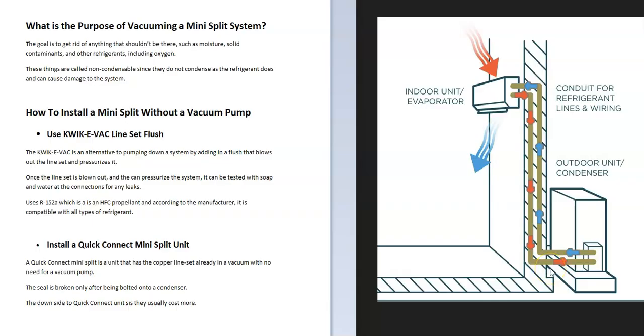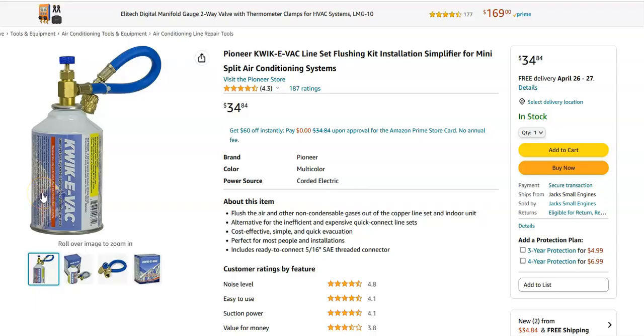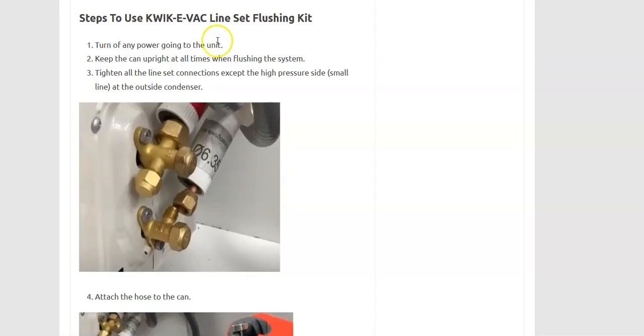What are some options if you don't want to use a vacuum pump? First, there's a thing called a Quickie Evac line set flushing kit, which is from Pioneer, who manufactures mini splits. Many people use this method. To use this line set flushing kit, you tighten down all your line set connections except for one connection on the high pressure side.